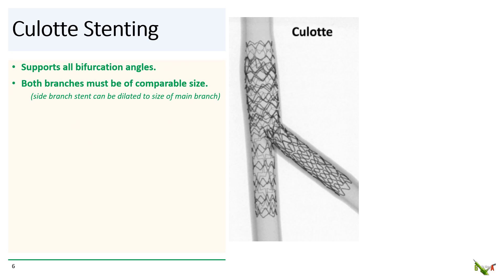Culotte stenting is a very versatile bifurcation technique which supports all bifurcation angles with full coverage of the bifurcation. It does require that both branches be comparable in size, but practically this just means you have to be able to dilate the side branch stent to the size of the main branch stent. So for instance, if you're using zion stents, you should not do culotte if the main branch is 4.0 mm and the side branch is 2.25 mm, because you can't take a 2.25 mm stent all the way up to 4.0.